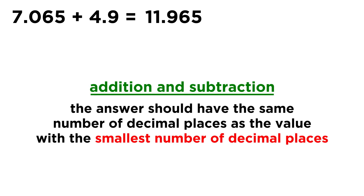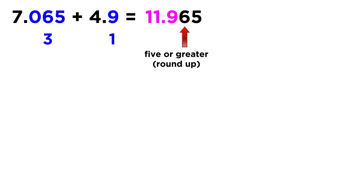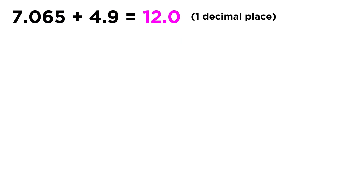But we have to remember the rule for addition and subtraction: the answer should have the same number of decimal places as the value with the smallest number of decimal places. The first number has three decimal places, and the other value has one decimal place. So our answer must also have one decimal place. We're looking at 11.9, but the next digit is 6, which is 5 or greater, so we round up. 11.96 rounds up to 12.0 — that is our answer.